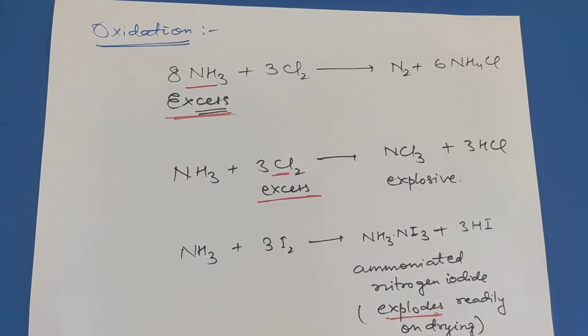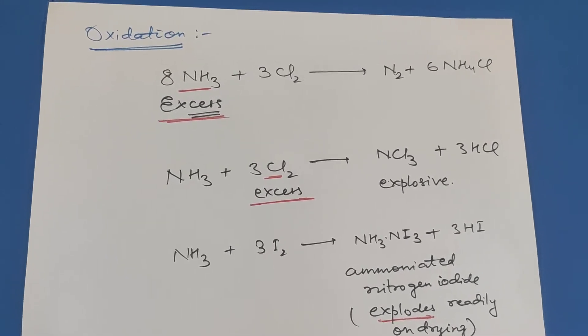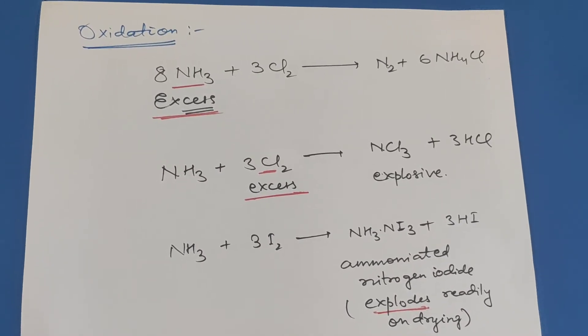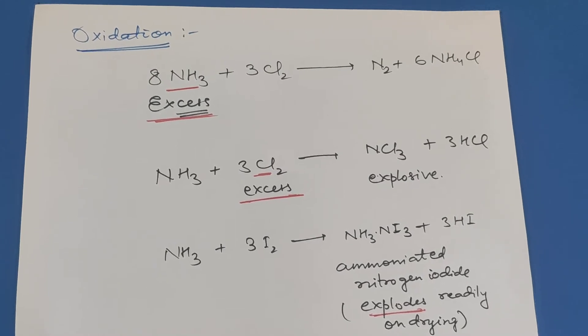Ammonia reacts with chlorine to form NCl3 nitrogen trichloride, which is an explosive, and hydrochloric acid when chlorine is in excess. Ammonia reacts with iodine to form ammoniated nitrogen iodide, which explodes readily on drying, plus hydroiodic acid.